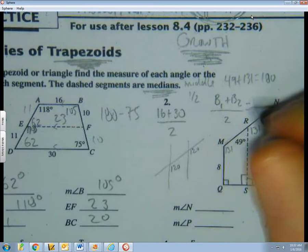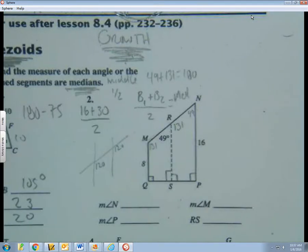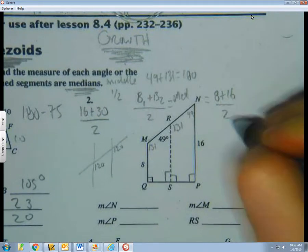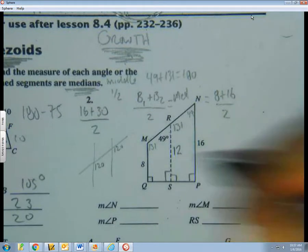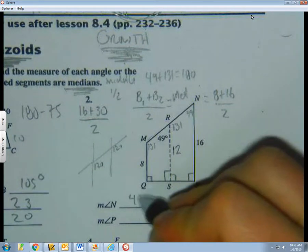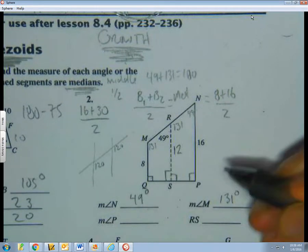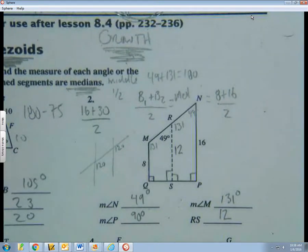So in our case, I'll go ahead and bump this over a little more space. It is 8 plus 16 over 2, which is 24 over 2, which is 12. And it's just a matter of filling stuff in. N is 49, M is 131, those are degrees, P is 90, RS is 20. So that is that.